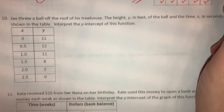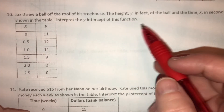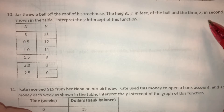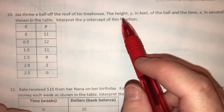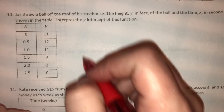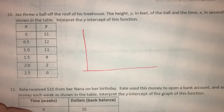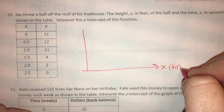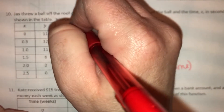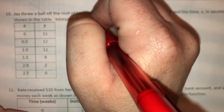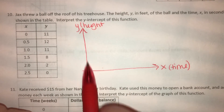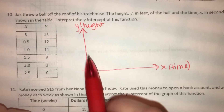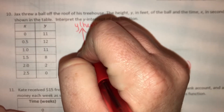Number 10: Jack threw a ball off the roof of his treehouse. The height y in feet of the ball and the time x in seconds is shown in the table. Interpret the y-intercept of this function. So the height in feet is y and the time in seconds is x. The x-axis is time in seconds and the y-axis is the height of the ball. When time is zero, the height is 11 feet.